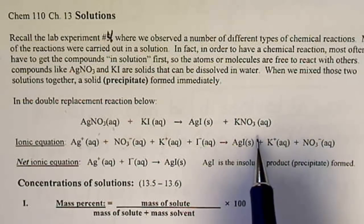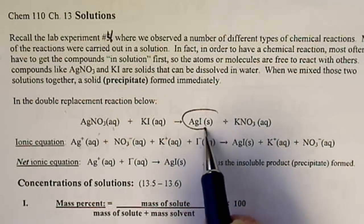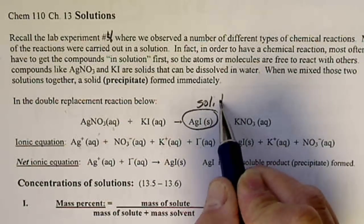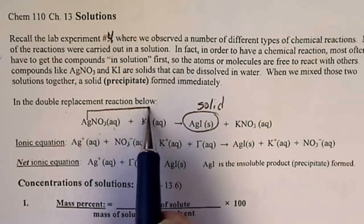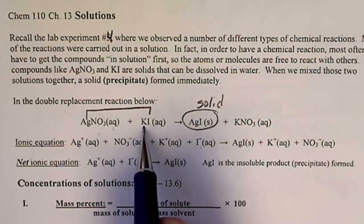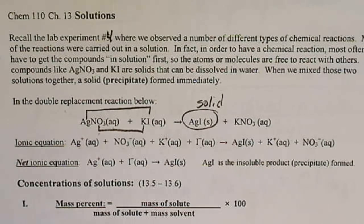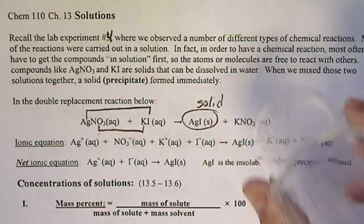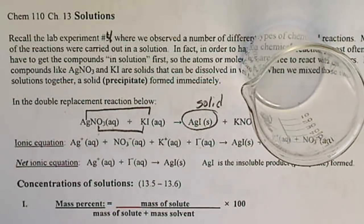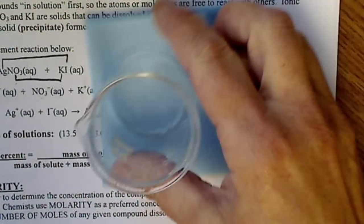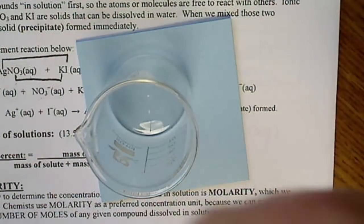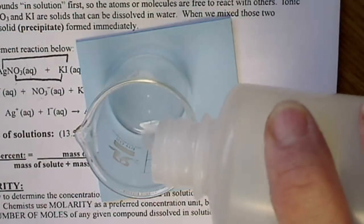When we mix this together, we ended up seeing a white solid form, and this reaction was when this metal gets together with this non-metal, and then this metal gets together with this non-metal, so you may remember me referring to that as wife swapping. So I'm going to put this beaker here on blue so that you can see that, and I'm just going to put some KI in here.